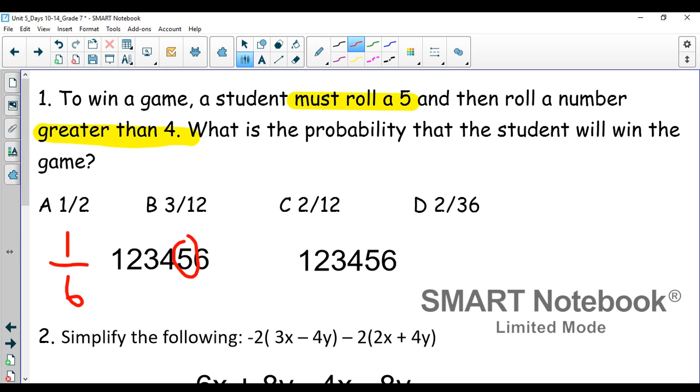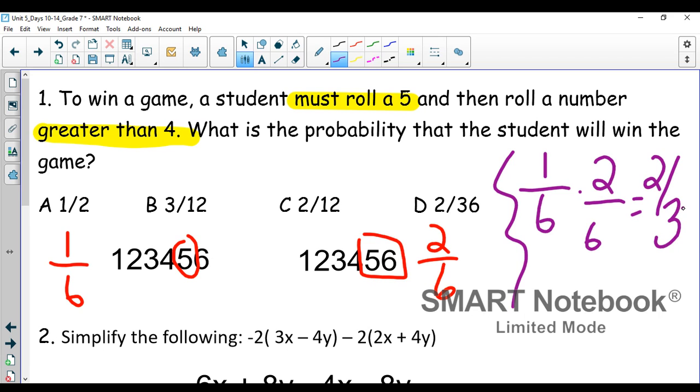Then rolling a number greater than four. There are two numbers out of six that are greater than four. So when we're talking about more than one event, it's a probability of the first event times the probability of the second event, which gives us two over 36. If you had a calculator, you could simplify that to one over 18.